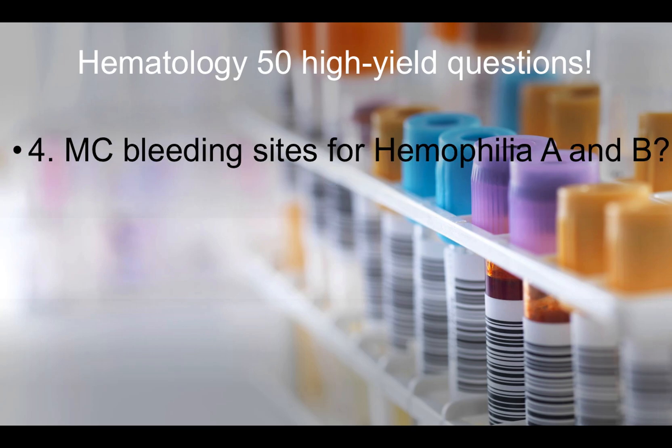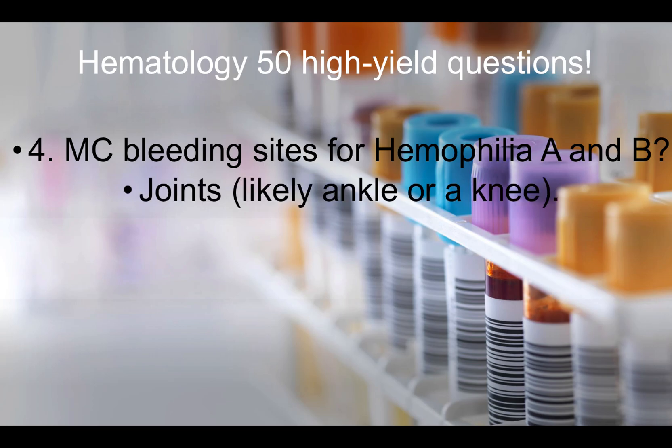Question number four: What is the most common bleeding site for hemophilias A and B? In a question stem, they can tell you the patient is from Europe or is Asian and has hemophilia, then ask for the most common bleeding site. The answer is joints, likely ankle or knee.